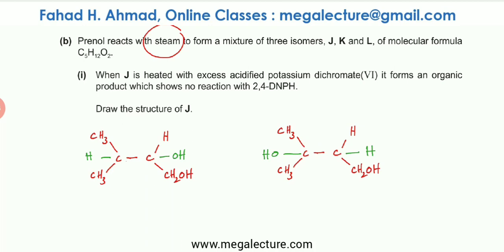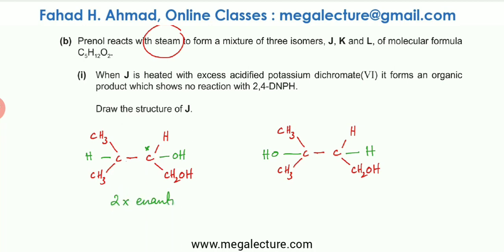The question states that three isomers are produced, but we only have two structural formulas. The third isomer exists because one carbon is chiral — this molecule exists as two mirror images, forming optical isomers (two enantiomers). So this molecule counts as two, giving a total of three isomers, two of which are stereoisomers.